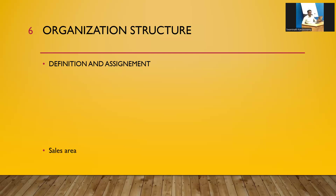How do you determine Shipping Point? Shipping Point is where goods are loaded into the truck and sent to the customer. It is determined using transaction code OBL2. The fields in OBL2 are: Shipping Condition, Loading Group, Plant, Shipping Point, and Manual Shipping. Shipping Condition comes from the Customer Master. Loading Group comes from the Material Master. This is Shipping Point determination — one of the key organizational structures in SAP SD.